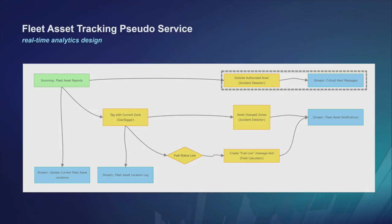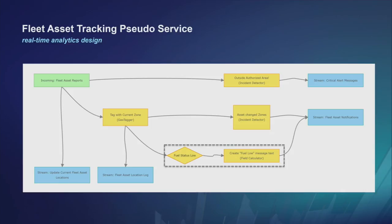The vehicles can send not only location but vehicle diagnostic information. If a message includes a fuel status, GeoEvent Server can detect that. A filter — represented by a diamond — simply asks: does the fuel status attribute indicate low or adequate? If it says low, we can send an email to a logistics fuel truck to go service that vehicle. This is another type of analytic we might leverage in GeoEvent Server.